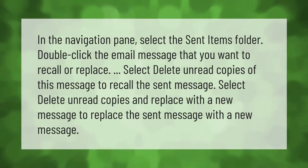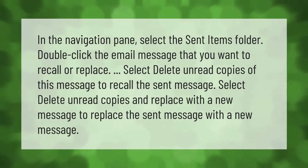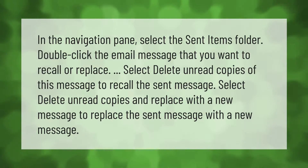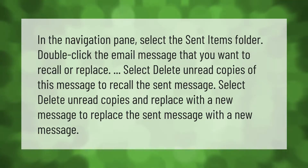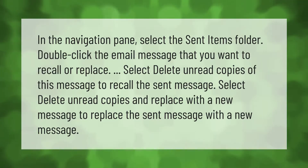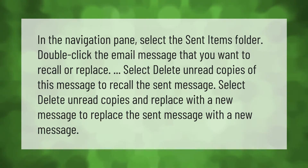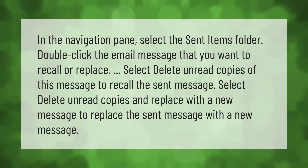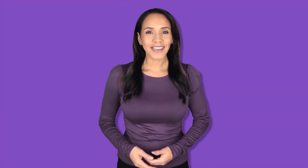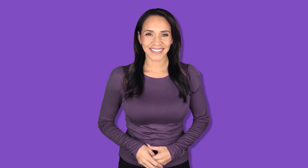In the navigation pane, select the Sent Items folder. Double-click the email message that you want to recall or replace. Select 'Delete unread copies of this message' to recall the sent message, or select 'Delete unread copies and replace with a new message' to replace the sent message with a new message. Thanks for watching — please subscribe and hit the bell notification.